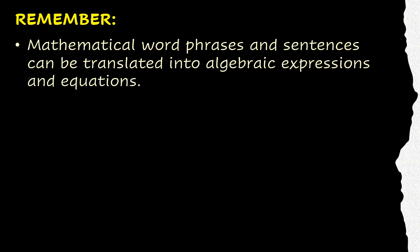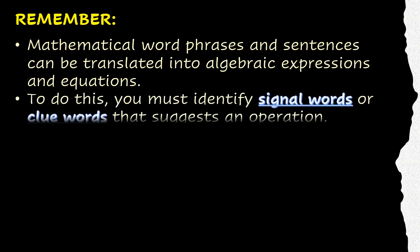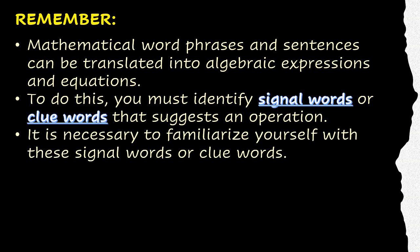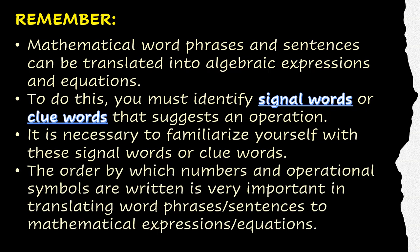You see, mathematical word phrases and sentences can be translated into algebraic expressions and equations. To do this, you must identify signal words or clue words that suggest an operation. It is necessary to familiarize yourself with these signal words or clue words. The order by which numbers and operational symbols are written is very important in translating word phrases or sentences to mathematical expressions or equations.